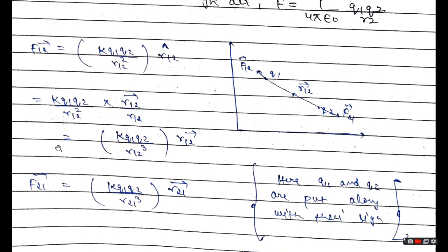This is our Coulomb's Law and this is our formula. Between two charges Q1 and Q2, we can calculate both the magnitude of the force and its direction using this formula.